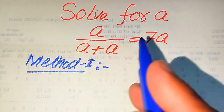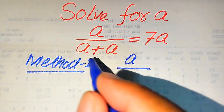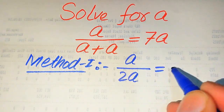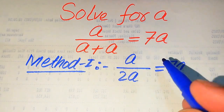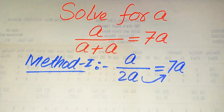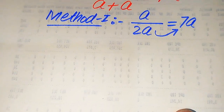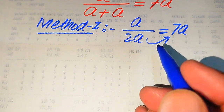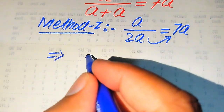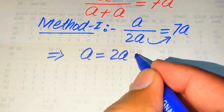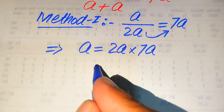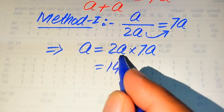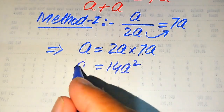Here we have a divided by a plus a, and a divided by a plus a becomes two times of a, which equals seven times of a. We move this two a to the right hand side — so two a is divided on the left hand side, and when we move it to the right hand side it is multiplied by seven a. So it becomes a equals two a multiplied by seven a, and two times seven becomes 14, and a multiplied by a becomes a squared.